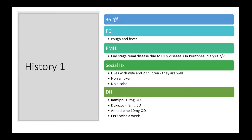Let's take a look at the first half of the history and try to identify some risk factors of mortality in COVID. This is a 36-year-old male who was brought in by ambulance to the emergency department with fever and cough. He has a background of end-stage renal disease on daily peritoneal dialysis secondary to hypertensive disease. He is on three classes of antihypertensives and EPO twice a week. He lives with his wife and two young children, never smoked and does not drink alcohol.